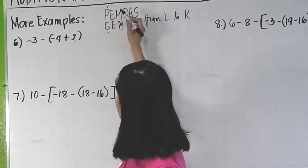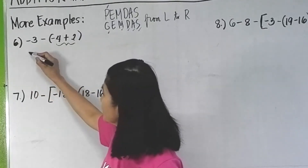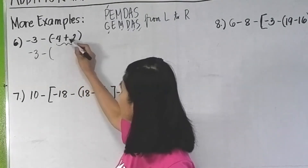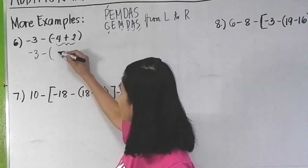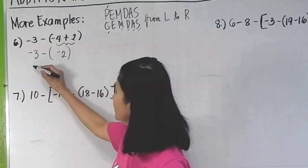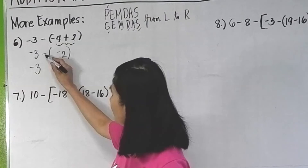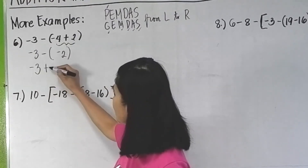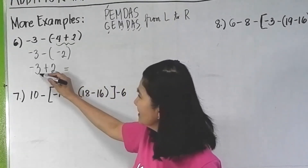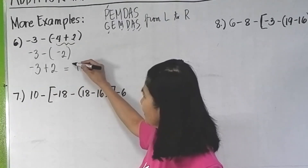We have a grouping, so solve inside first. Copy negative 3 minus — inside: negative 4 plus 2. Subtract: 4 minus 2 is 2. Copy the sign of the bigger — the bigger is 4, its sign is negative, so you get negative 2. Now this means negative 3 minus negative 2. The negative of a negative is positive 2, so this is negative 3 plus 2. Subtract: 3 minus 2 is 1. Copy the sign of the bigger — the answer is negative 1.